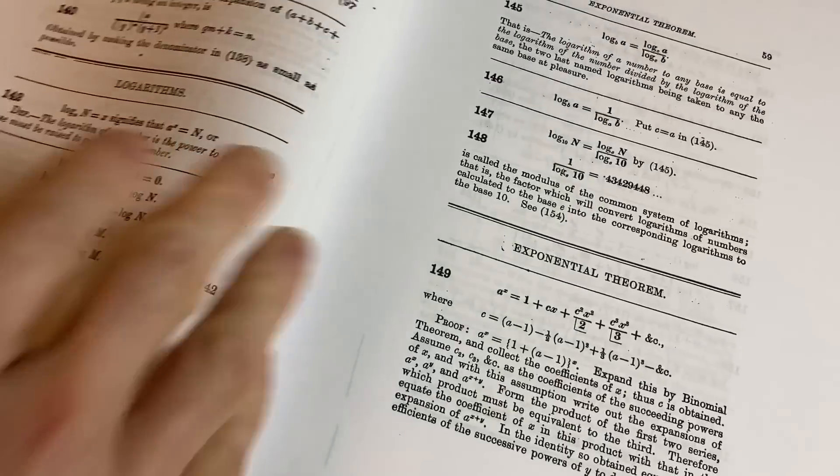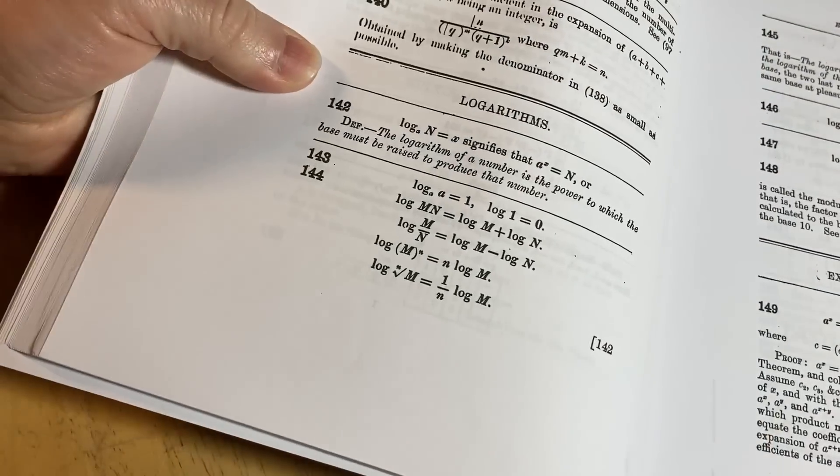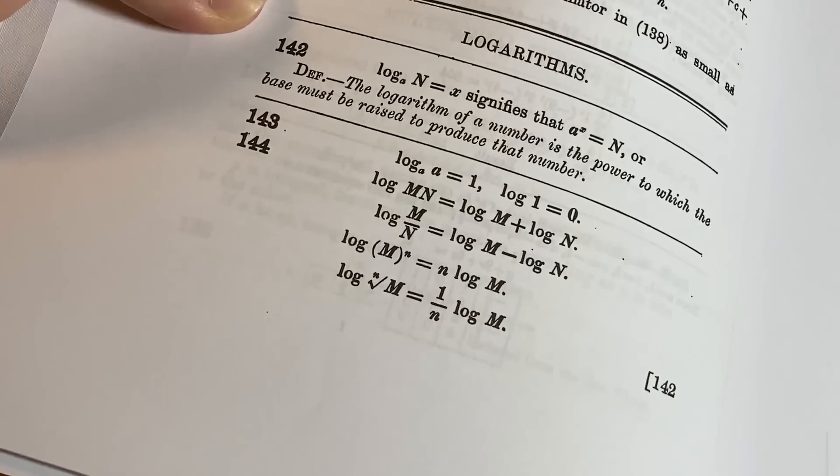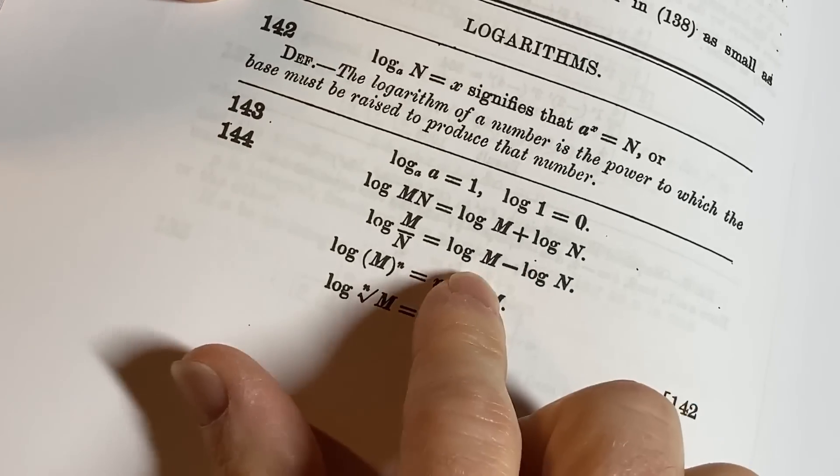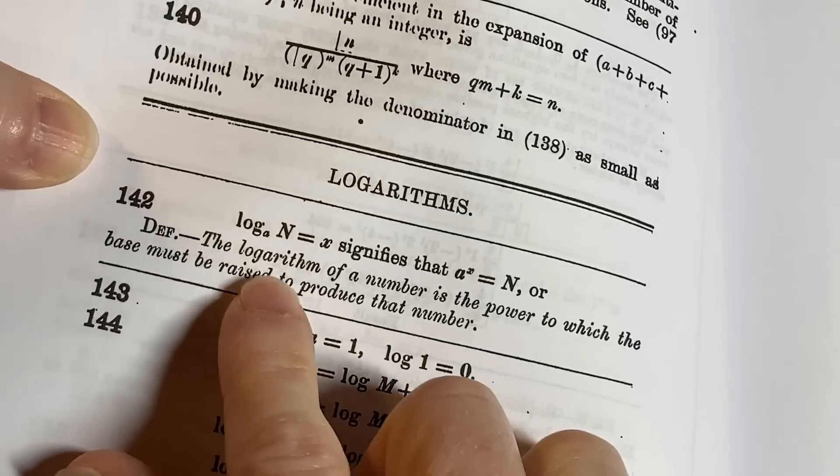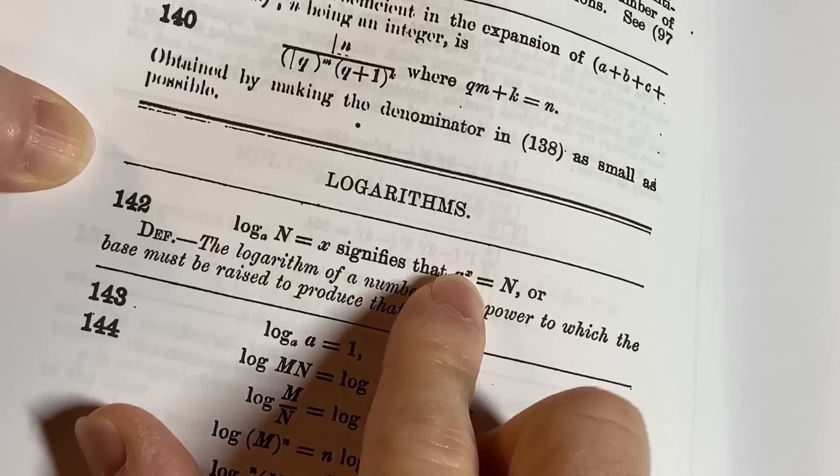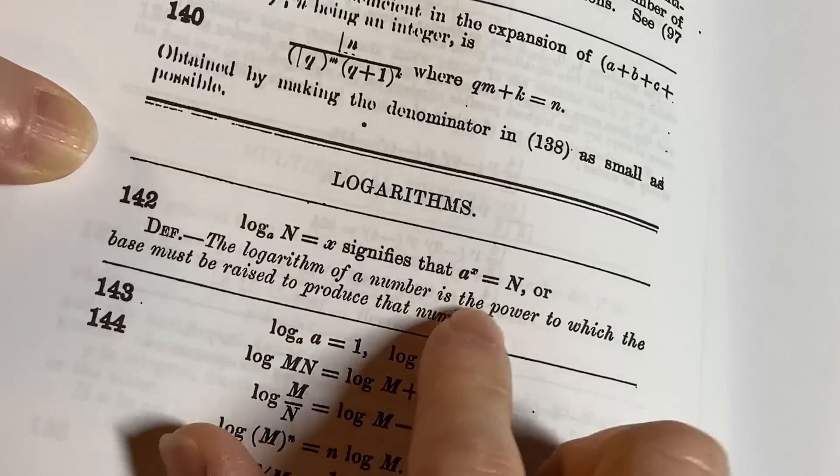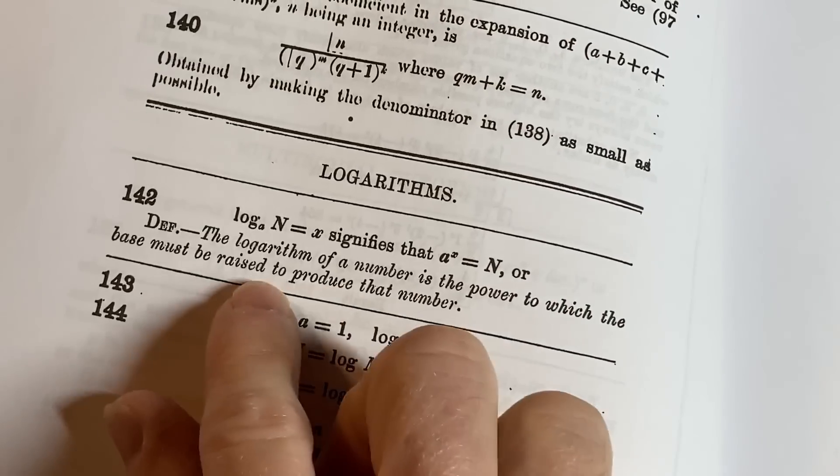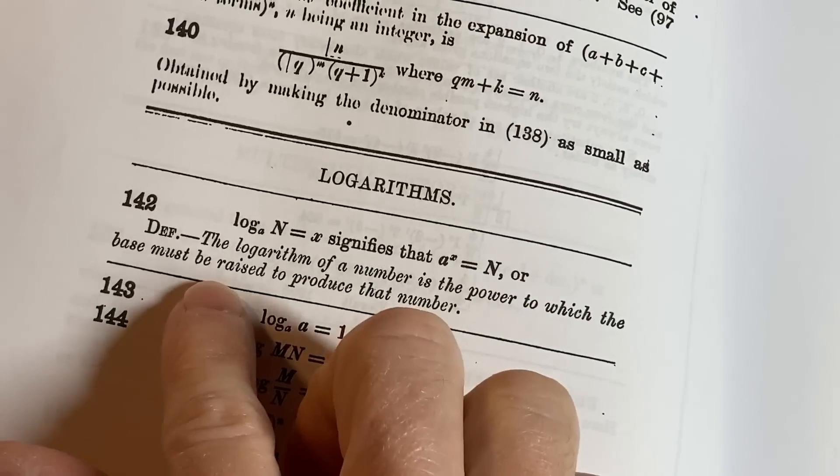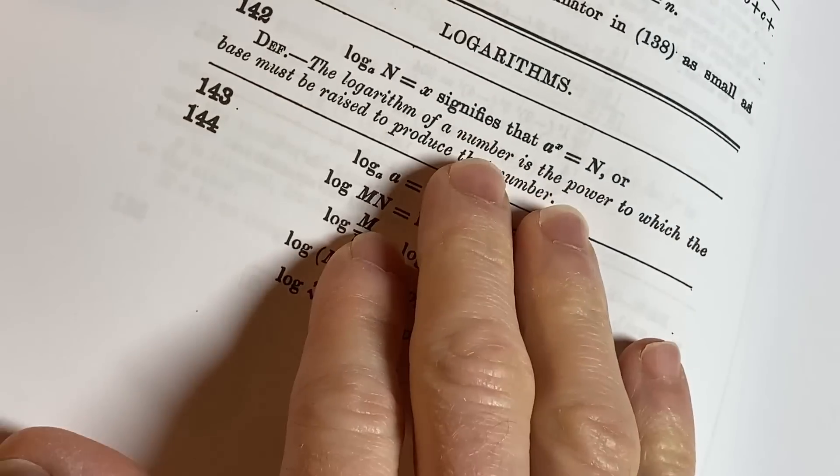So let's just skip to somewhere in the middle and see what we have. Let's just go through some of these results. So here we have some properties for logs. So this is something that you learn in basic algebra. So Ramanujan probably decided, oh, interesting. Logarithmic properties. And here it gives you the definition. Log base a of n equals x signifies that a to the x equals n. So these are equivalent expressions, right?